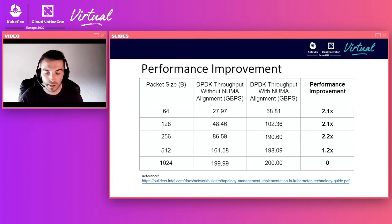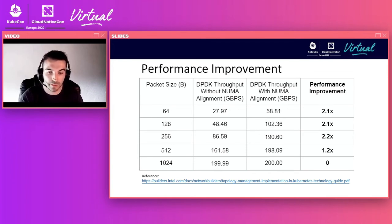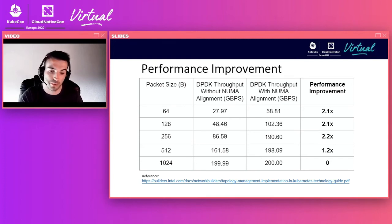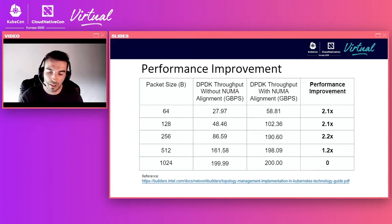At Intel, updated collateral for the Container Experience Kits includes a technology guide on Topology Manager with performance benchmarking. The key takeaway is that workloads with NUMA-aligned resources via Topology Manager can achieve a performance increase of over 2x compared to workloads with suboptimal allocation. In testing, performance improvements did plateau for larger packet sizes over 1024 bytes as the line rate maxed out at around 200 Gbps. The link to the technology guide is included in the slides.